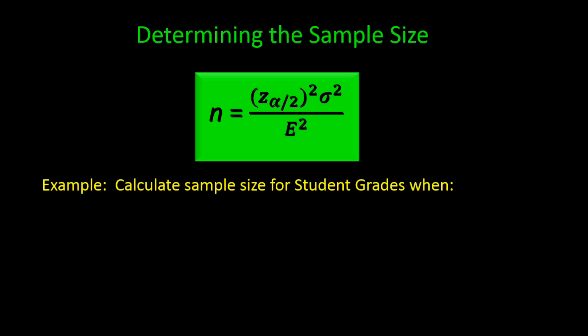Let's say we would like to sample a group of students to determine their grades on a statistics exam. We would like to calculate the optimal sample size for a desired margin of error of five points and a 95% confidence interval. Remember the z value for a 95% confidence interval is 1.96.